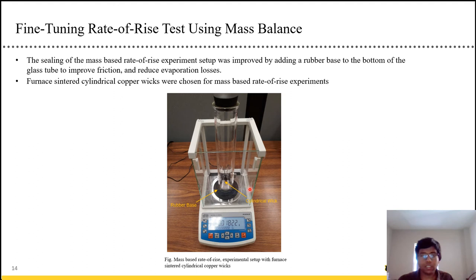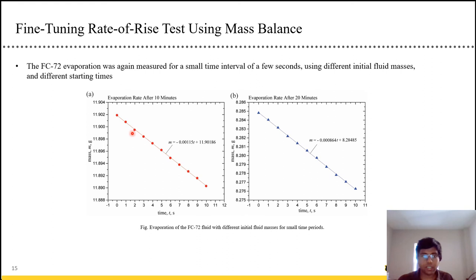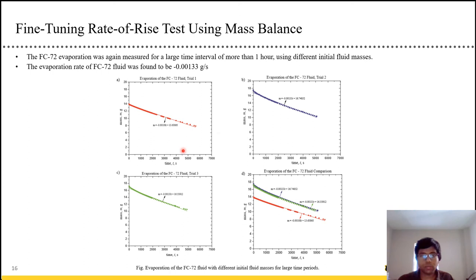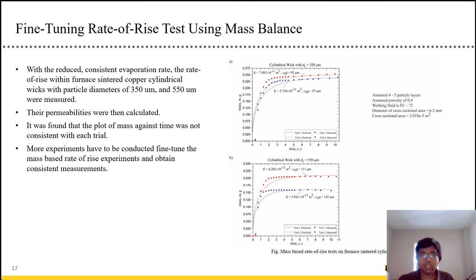We put the setup on a mass balance and we sealed it, or we attempt to seal it using a glass tube with a rubber base. We chose a cylindrical copper sintered wicks for now. And we found the evaporation again. And we got these two plots here. The evaporation rate was found to be something around 0.001 in both cases. So we tried it again over a much longer time interval. We tried it three different times. And we got an evaporation rate of negative 0.00133 gram per second.